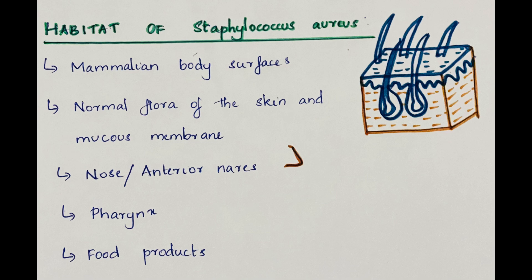Habitat of Staphylococcus aureus. The natural habitat is mammalian body surfaces. They are normal flora of the skin and mucous membrane. They are also present in the nose or anterior nares, and can be found in the pharynx. Enterogenic strains are also found in various food products.